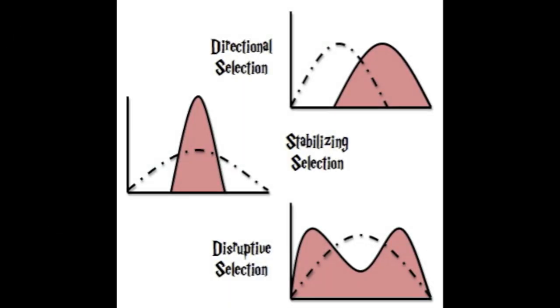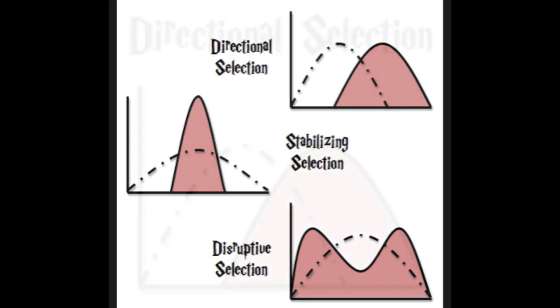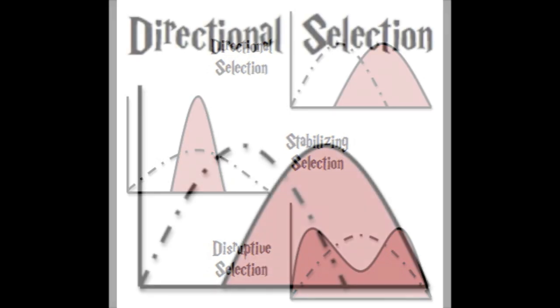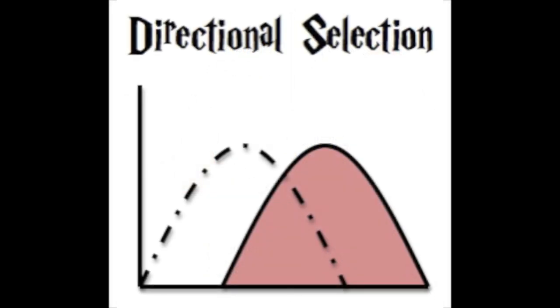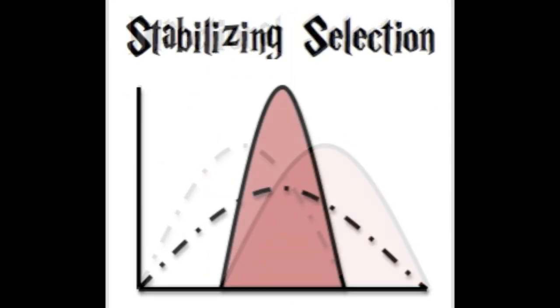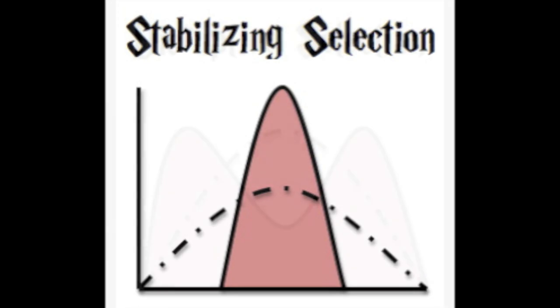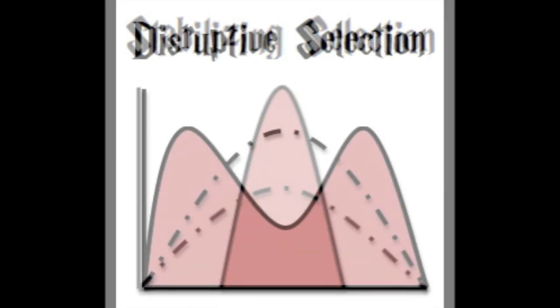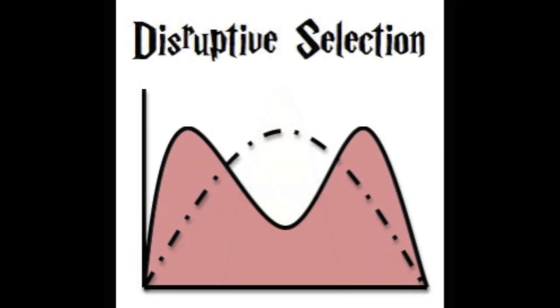In this tutorial, metaphors from Harry Potter will be used to portray the three modes of evolutionary selection: Directional, Stabilizing, and Disruptive.